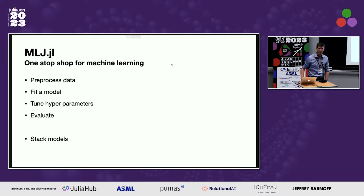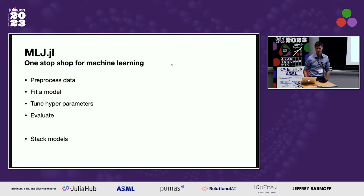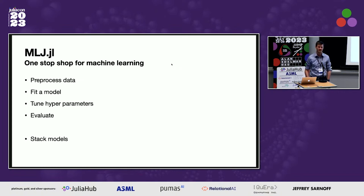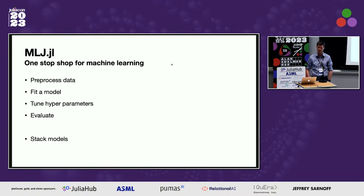We're going to use MLJ — it's been mentioned a few times already in this talk. It's your one-stop shop for machine learning, giving you all the tools you need in one package so you can do your entire machine learning workflow using MLJ functions. It provides a really nice interface for preprocessing data — scaling or encoding categorical and numerical data — as well as fitting models including linear regression, tree models, and k-nearest neighbors, all through one interface without worrying about how each model is implemented.